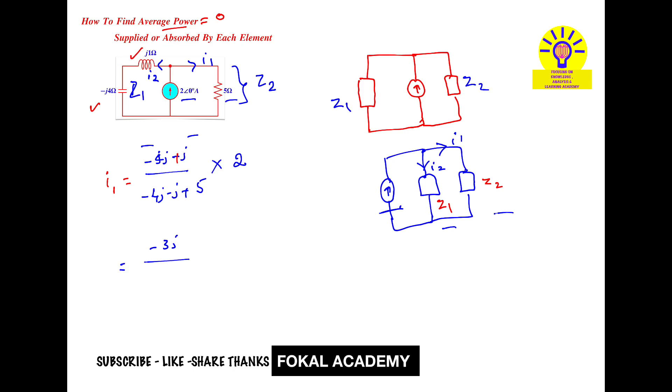So I1 equals minus J4 plus J1, which gives minus 4J plus J, nothing but minus 3J, upon 6 plus J. So minus 3J plus 5 into 2, it becomes minus 6J upon minus 3J plus 5. It can be written as minus 6J upon 5 minus 3J.